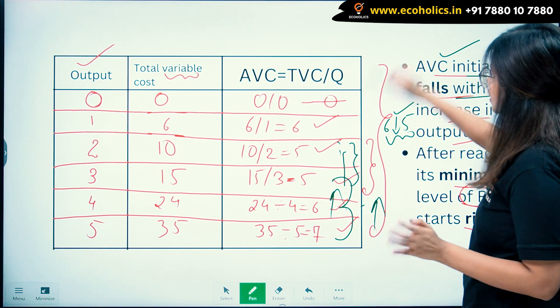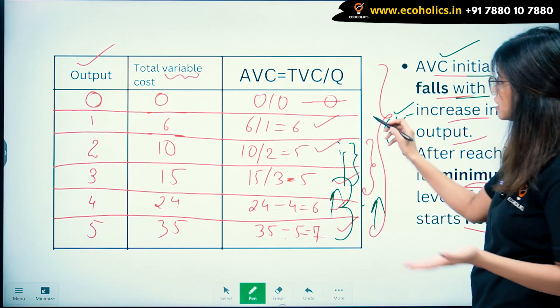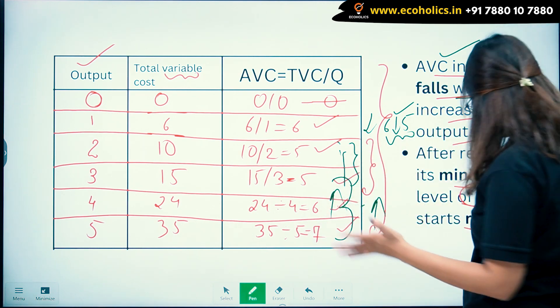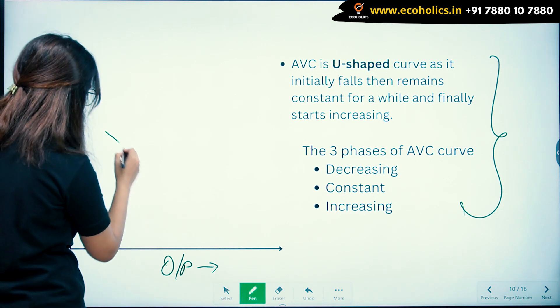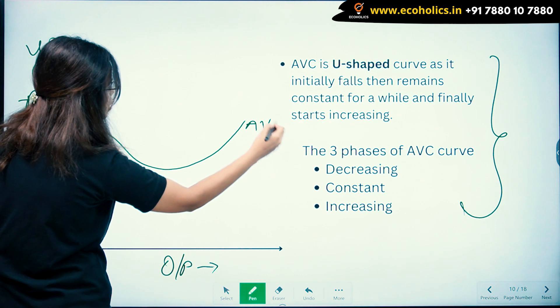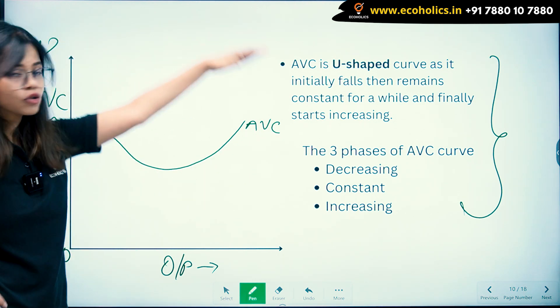It is first falling, then it reaches its minimum level, and then it starts rising. So first it is falling, reaching here, and then it starts to rise. This is how your AVC graph looks like, and this AVC is U-shaped.